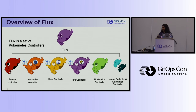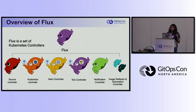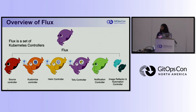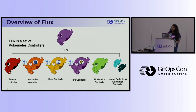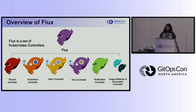The notification controller can also listen for webhooks from GitHub or GitLab — it can listen for a webhook event when a merge is made and kick off a reconciliation, instead of waiting for your reconciliation interval of five or ten minutes. The image reflector and automation controllers work together to update your deployment based on a new image tag. If it's listening to an image repository and you push a new tag, it can update your YAML and automatically deploy it.